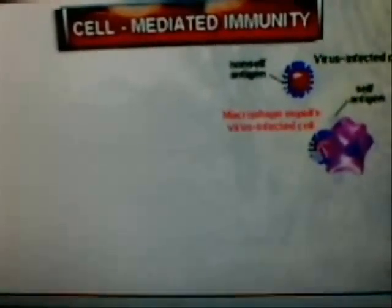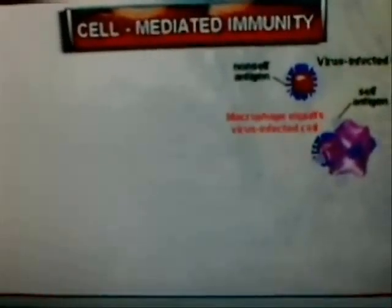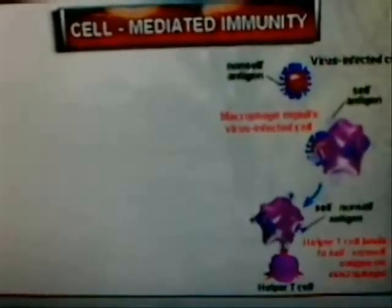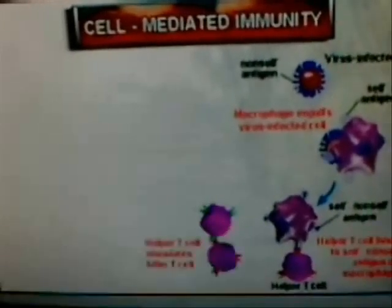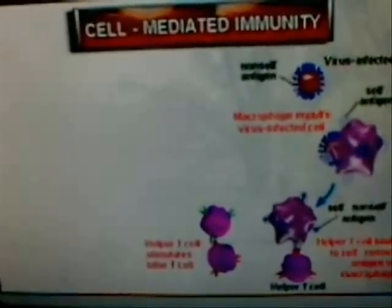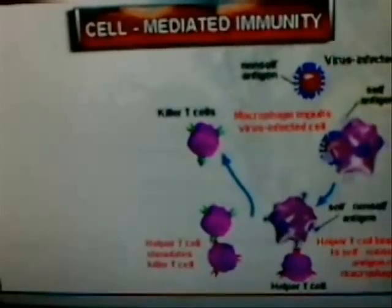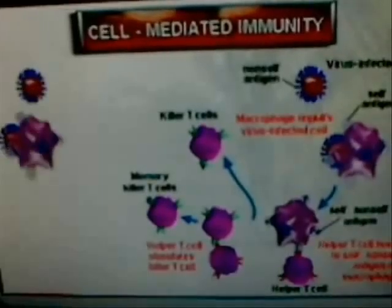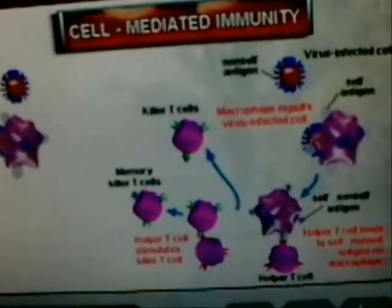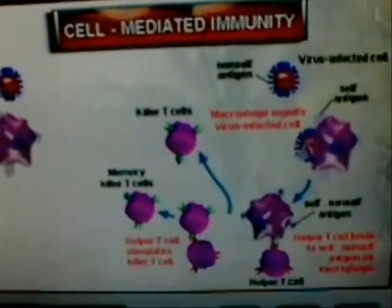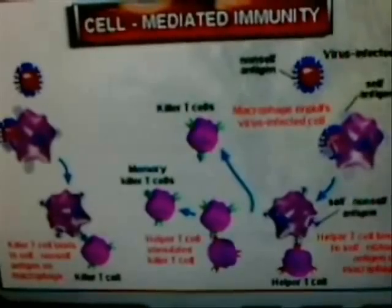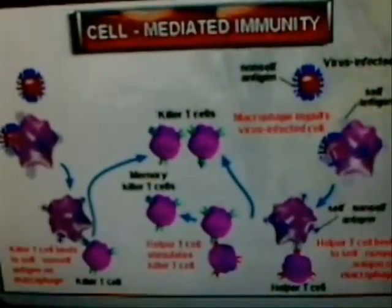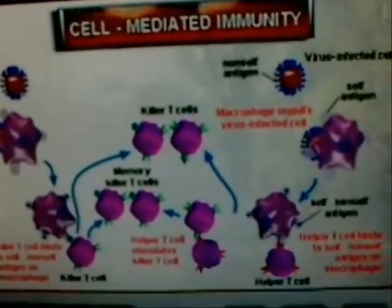Next, a helper T cell binds to a self-antigen protruding from the surface of the macrophage. The activated helper T cell then stimulates another type of T cell called a cytotoxic or killer T cell. The stimulated killer T cell produces more killer T cells as well as memory killer T cells. It is also possible for killer T cells to directly bind to a self-non-self antigen on the surface of the macrophage. If this occurs, the killer T cell bound to the macrophage may produce additional killer T cells and memory killer T cells without first having to be stimulated by a helper T cell.